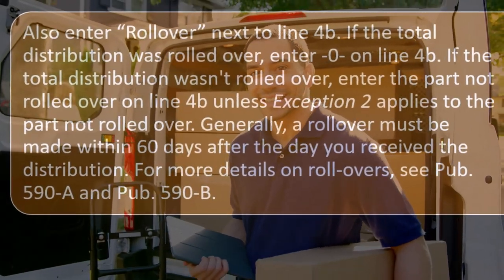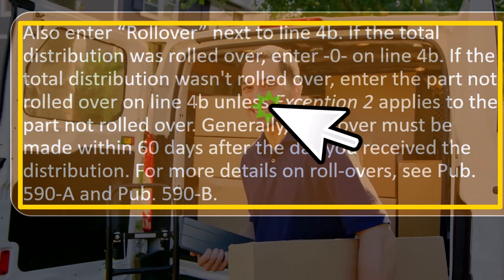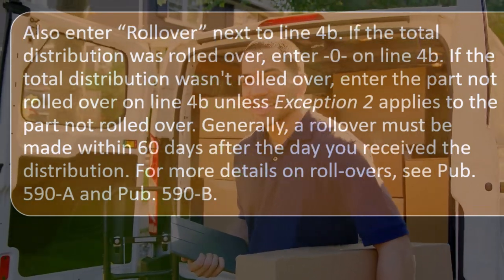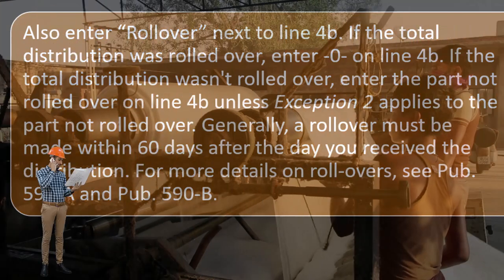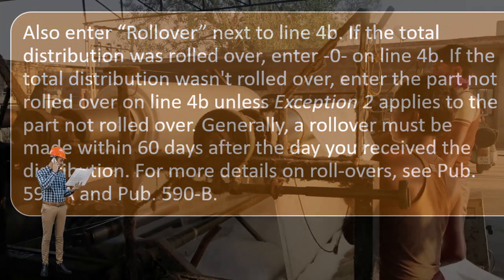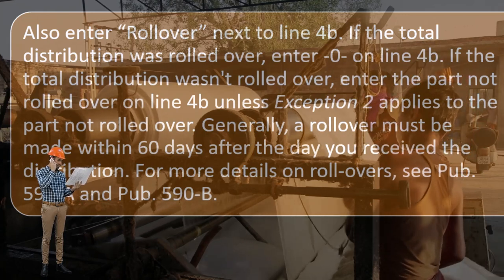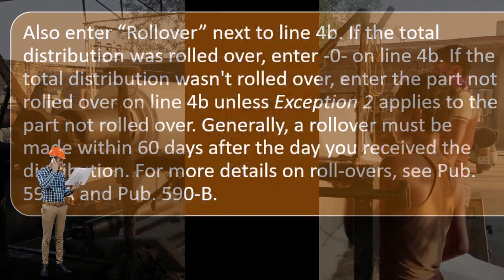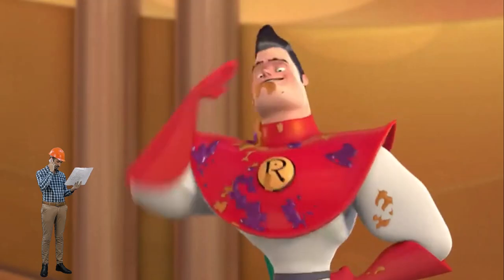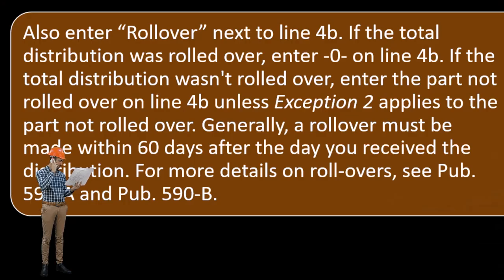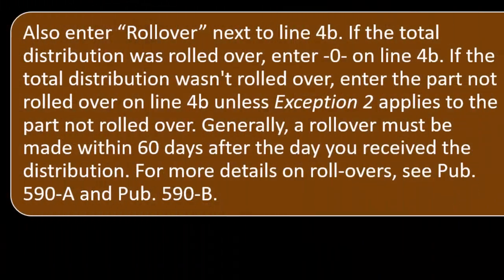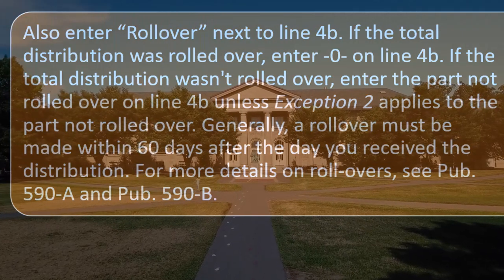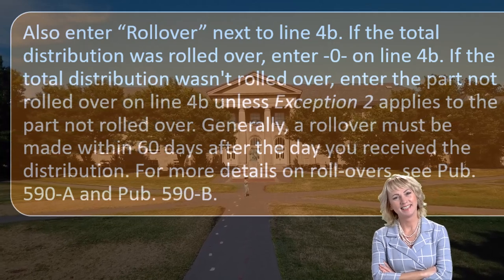This also applies if someone is switching jobs or changing financial institutions — make sure the transaction is categorized as a rollover, not a distribution. Talk to the financial institutions to work that out. If the total distribution wasn't rolled over, enter the part not rolled over on line 4b, unless exception two applies. Generally, a rollover must be made within 60 days after the day you receive the distribution. Usually these days it can be nearly same-day if rolling over from one institution to another. For more details on rollovers, see Publication 590-A and Publication 590-B.